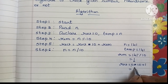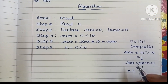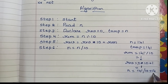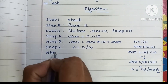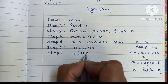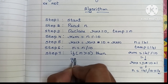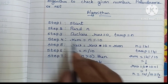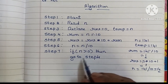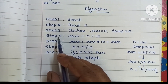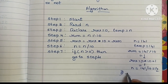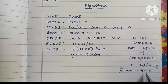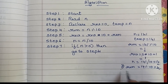Next, update n: n = 141 divided by 10, so n becomes 14. Step 7: check if n is greater than 0 — since 14 is greater than 0, we go back to step 4. Now reminder = 14 modulo 10, so remainder becomes 4.